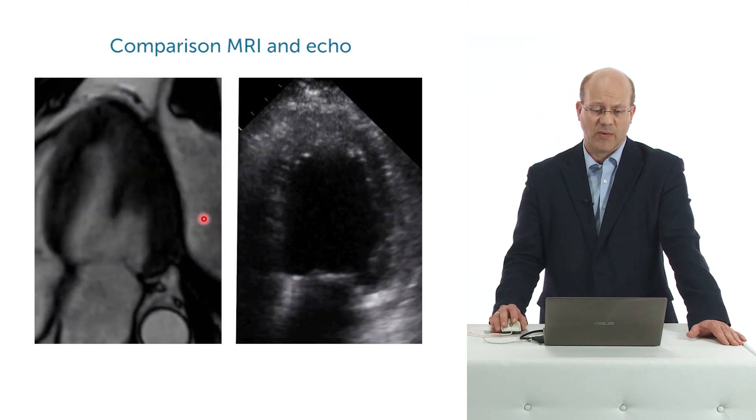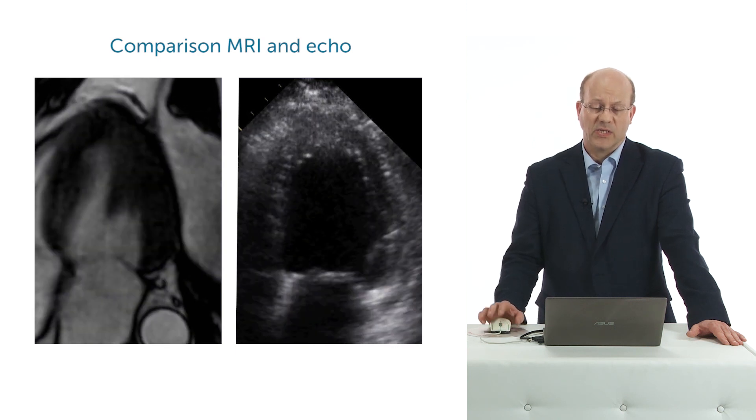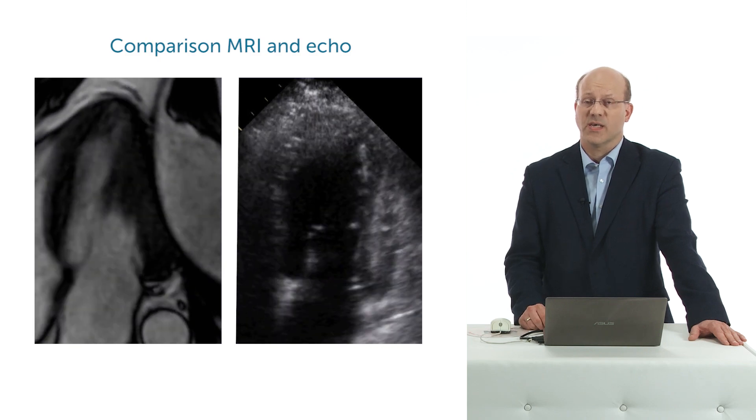And this is exactly the funny motion that we see in the echo image. If you compare the MRI image and the echo image directly, you see that they both show exactly the same motion pattern. So I think this is a nice example that you can also use deformation imaging to rule out disease. You see all sorts of strange things, and with speckle tracking you can sometimes get a little better understanding of what the problem really is.